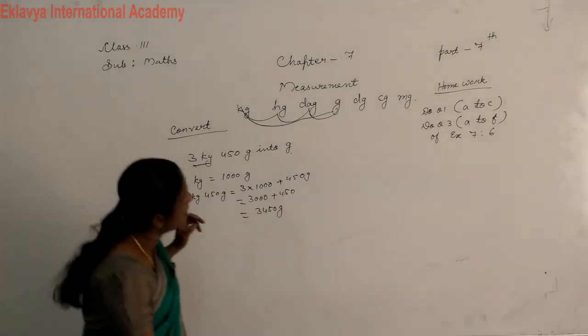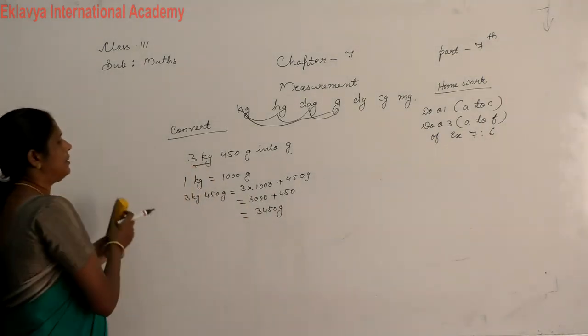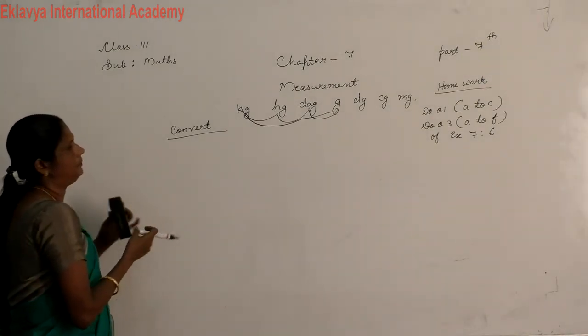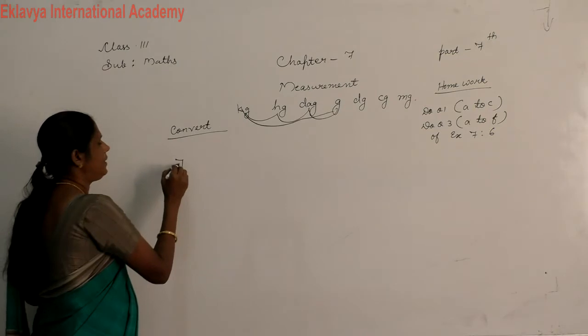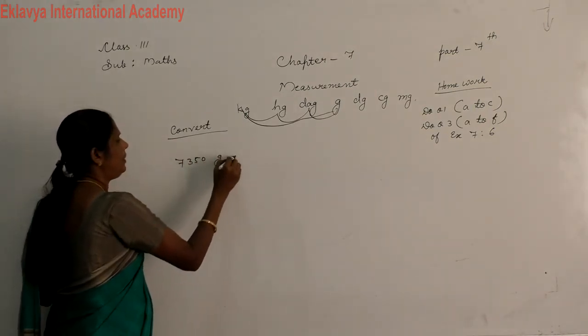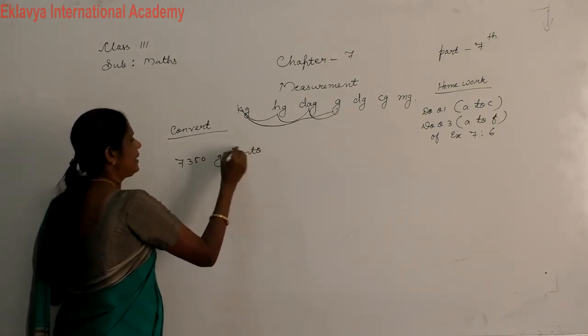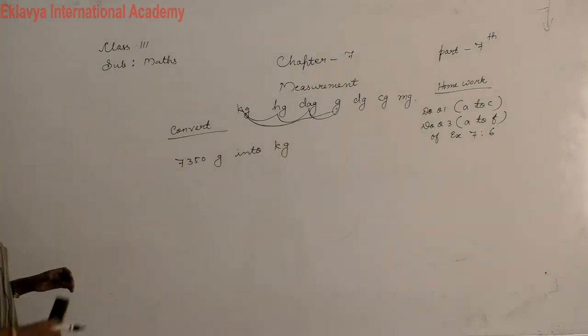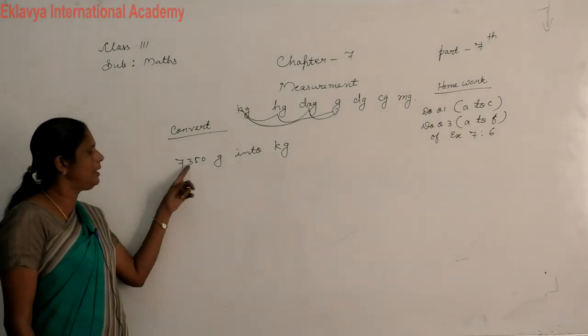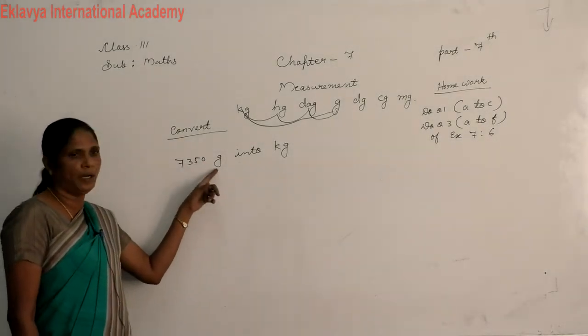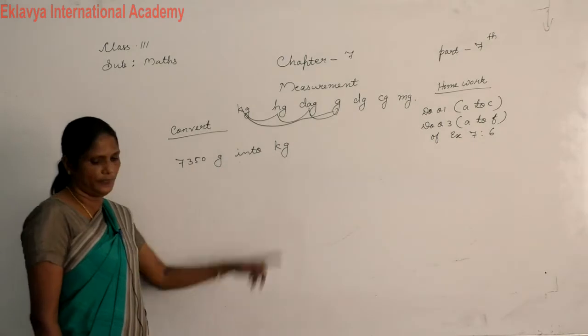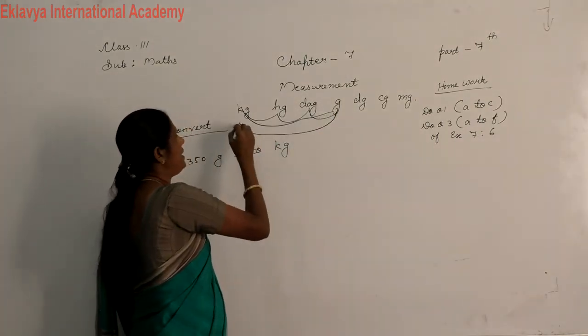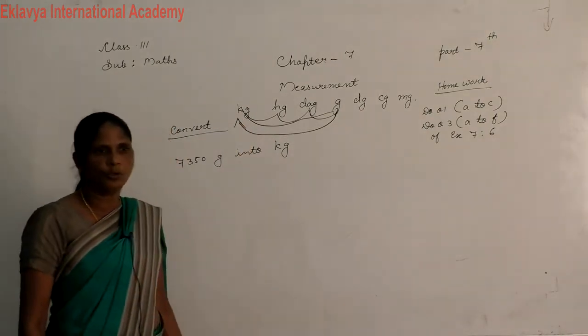There is now another example. 7,350 gram into kg. Convert 7,350 gram into kg. Where is our gram here? Gram. Gram to kg.